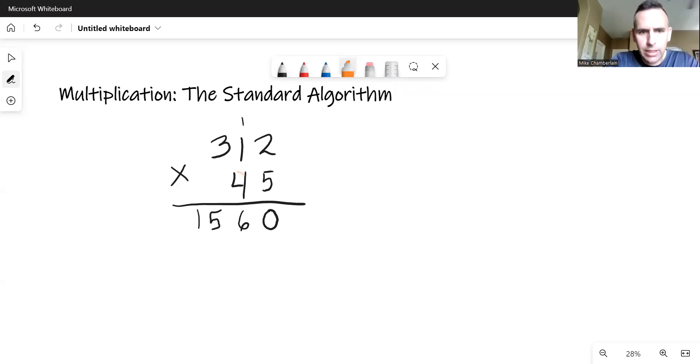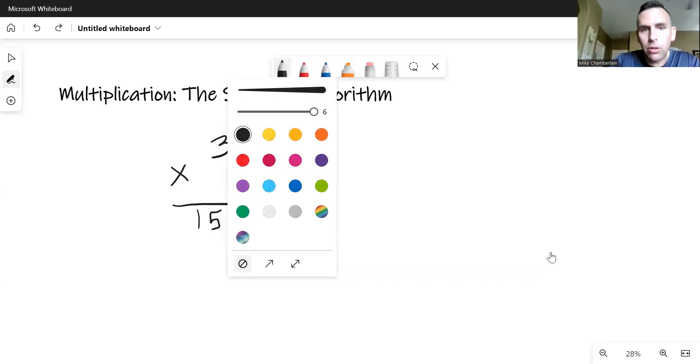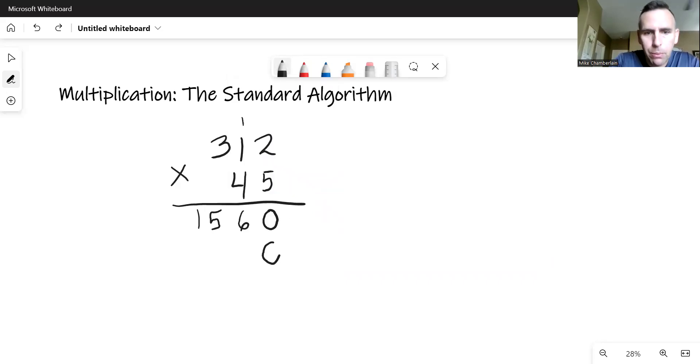When we go to the next number, the four is in the tens place. So we have to move over a place value, just like we did with the dots and boxes and start in the tens place. To do that, we put a placeholder or a zero. Some people put an X. I don't like the X at all. You might even cross out what you carried before just so you don't get confused by that.